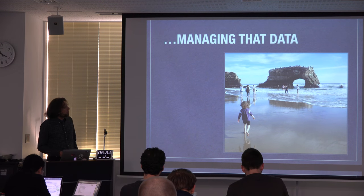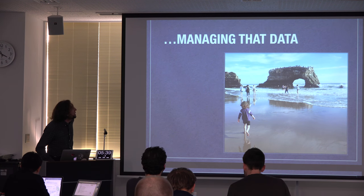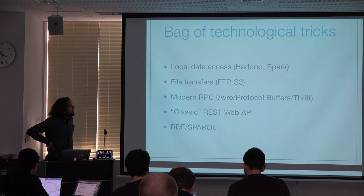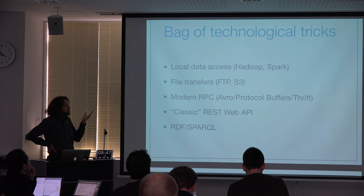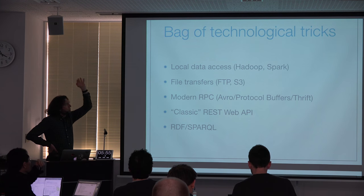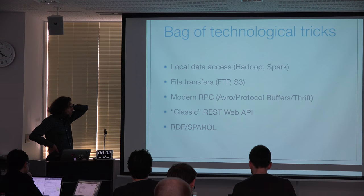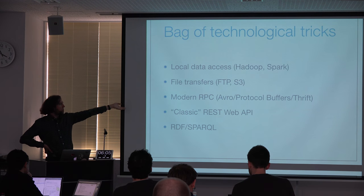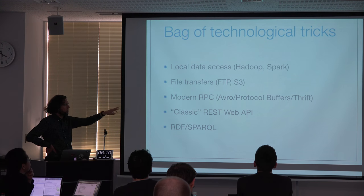Any system we ultimately design needs to make sure we don't drop the ball on metadata. And then there's managing this data. We have this huge bag of technological tricks. There are a couple of things that have been used in GA4GH and similar systems — Hadoop and Spark for local data access, getting files via FTP and these days S3, remote procedure call systems, Avro, protocol buffers, and Thrift. I don't know if anybody's actually using Thrift in this space, but the first two are used.